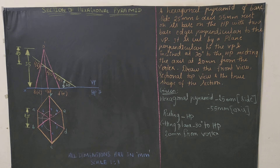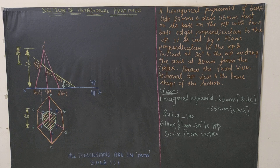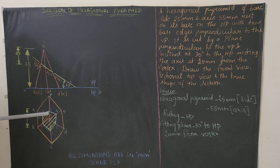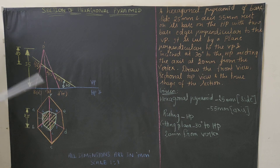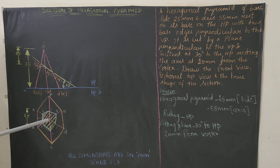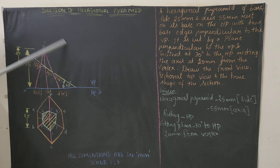Now all points 1 through 6 are plotted. Connect them in order: 1 to 2, 2 to 3, 3 to 4, 4 to 5, 5 to 6, 6 to 1. Apply hatching at 45 degrees with equal spacing to complete the sectional top view. Whatever is obtained here is the sectional top view.